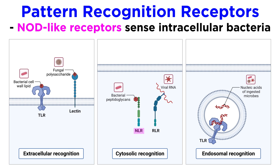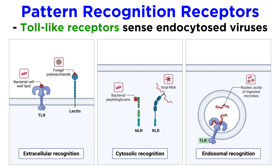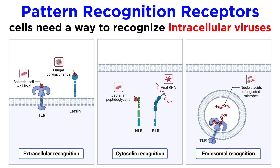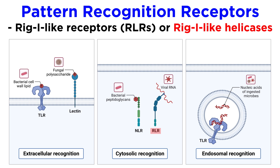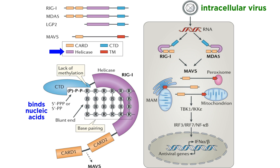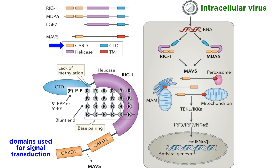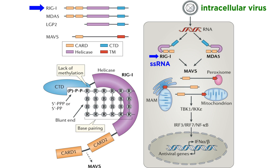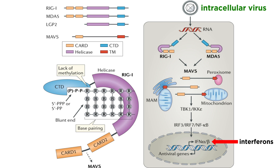So if NLRs can sense intracellular bacteria, and TLRs 3, 7, and 9 can sense endocytosed viruses, how do cells sense intracellular viruses? For this, they use the RIG1-like helicases. RIG1-like helicases sense viral nucleic acids. They have a helicase-like domain that can bind to viral RNA, and not one but two aminoterminal CARD domains that are used for signal transduction. Some examples include RIG1, which can specifically sense viral single-stranded RNA, and MDA5, which senses cytosolic double-stranded DNA. Activation of the RIG1-like helicases leads to production of type I interferons, which are important antiviral cytokines.